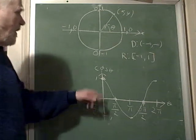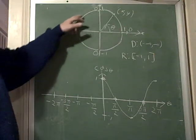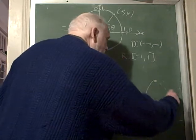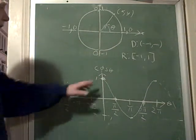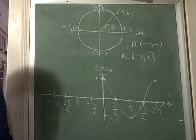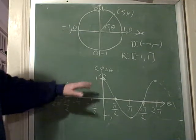And notice that as soon as it hits pi, it begins all over again. It starts all over again. So it continues going on and on like this. And the period is 2 pi, just like the sine. The period of the sine is 2 pi, and the period of the cosine is 2 pi.